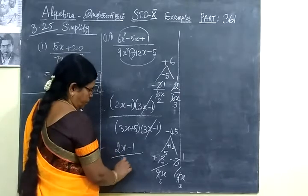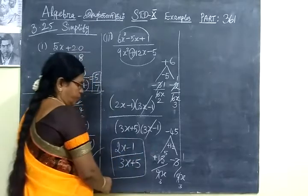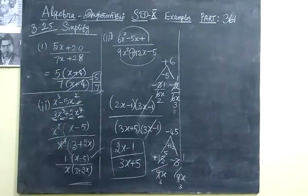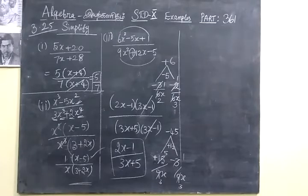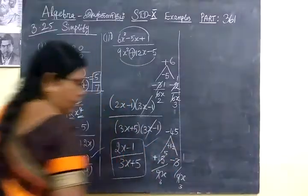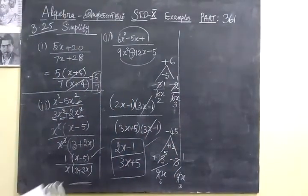Now we will check the answer. The answer for the third one, 2x minus 1 by 3x plus 5. So this one is correct. Now come to the next one.